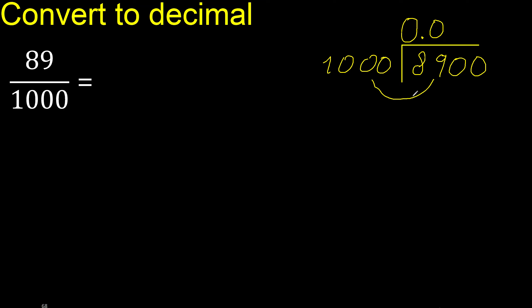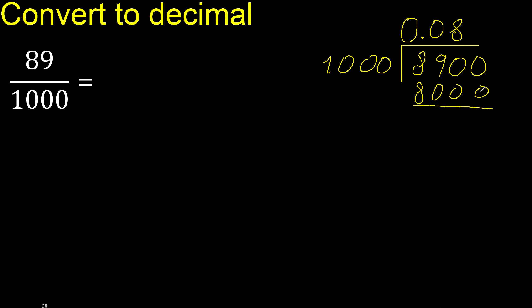Now it is not less, therefore find which number 1000 multiplied by is nearest but not greater. 1000 multiplied by 9 is 9000 — that is greater, therefore try 8. 1000 multiplied by 8 is 8000. Subtract. There is no number remaining, so complete with zero. 1000 multiplied by 9 is 9000.